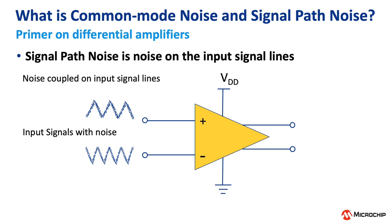But what happens if the difference between the two input signals ends up being quite small? Well, these sensors I mentioned previously are actually notorious for this and will result in outputs well into the millivolt range. So how do we solve for this? Well, if the sensor is used in environments with a lot of electrical noise, then that noise can easily be much greater than the sensor signal itself.